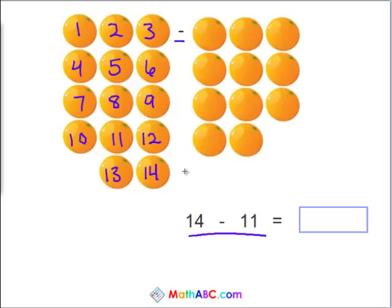And now let's count backwards and subtract 11. So let's count to 11 while crossing off the oranges. 1, 2, 3, 4, 5, 6, 7, 8, 9, 10, 11.